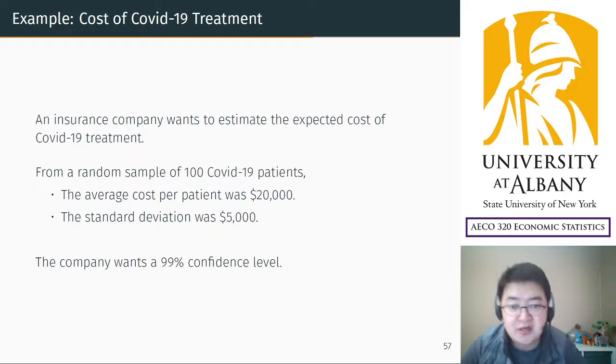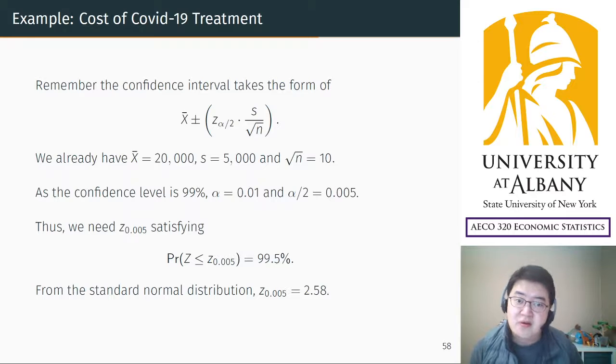Suppose that an insurance company wants to estimate the expected cost of COVID-19 treatment. From a random sample of 100 COVID-19 patients, we found that the average cost per patient was $20,000 and the standard deviation among the patients was $5,000. The insurance company wants a 99% confidence level. How do we calculate this?